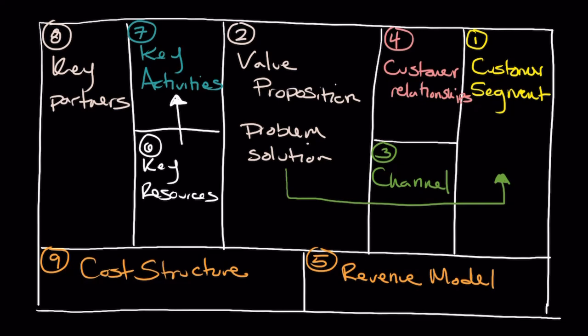It's important that with building blocks five and nine — revenue model and cost structure — we have some degree of financial viability. We need to determine that if we offer our value proposition to customers, it's all going to pencil out financially. If it's not going to lead to the results you want, why go down that path to begin with? So when you take a step back and look at the model, let me point out a couple of things now that you can see some of the building blocks.